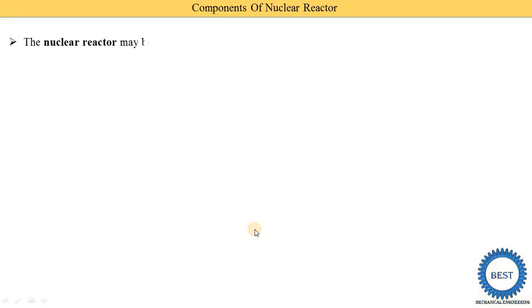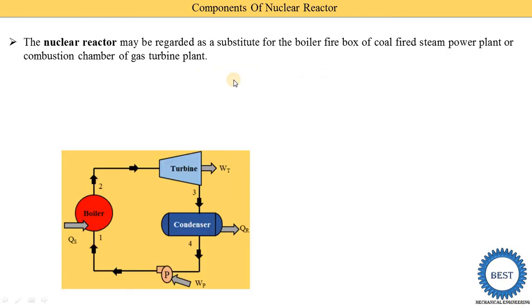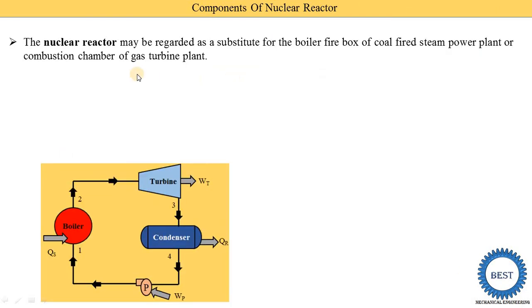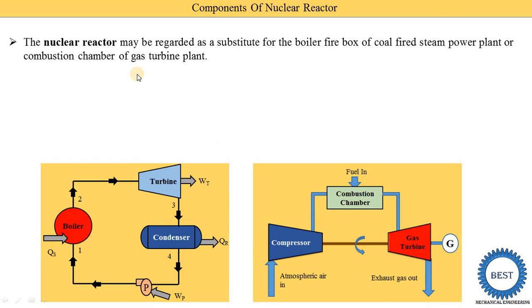The nuclear reactor may be regarded as a substitute for the boiler firebox of a coal-fired steam power plant or combustion chamber of a gas turbine power plant. In a steam power plant we use the boiler to convert water into steam, and in the boiler the combustion of fuel is carried out.